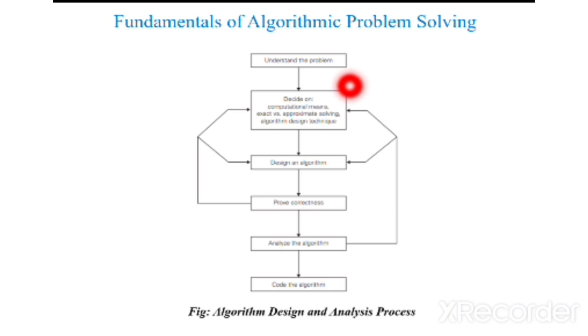Step 2 is ascertaining the computational means: exact versus approximate problem solving and algorithm design techniques. The third step is design an algorithm. Fourth, prove the correctness. Fifth, analyze the algorithm. The last one is code the algorithm. We'll get to know about each and every step in detail in the upcoming video.